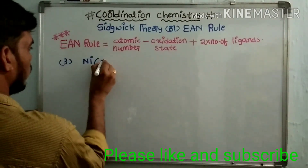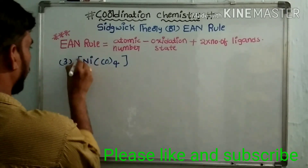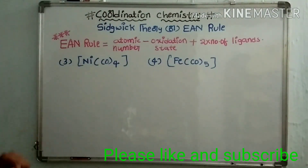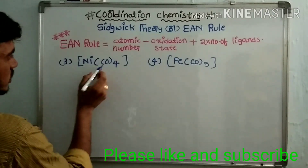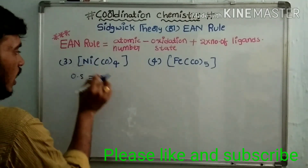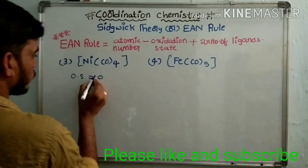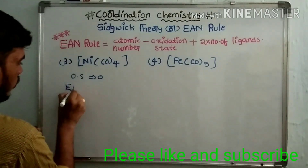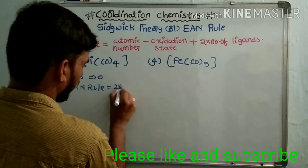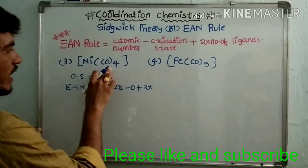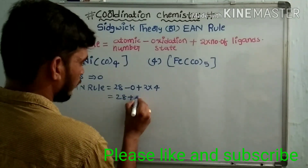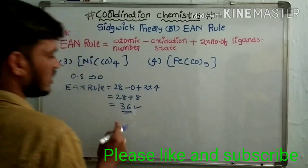The next examples are Ni(CO)₄ and Fe(CO)₅. For Ni(CO)₄, the carbonyl ligand is a neutral ligand, so the oxidation state of nickel is zero. The EAN value is: atomic number of nickel is 28, EAN = 28 − 0 + 2 × 4 = 28 + 8 = 36. This equals the atomic number of krypton, so Ni(CO)₄ is more stable.